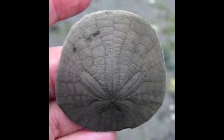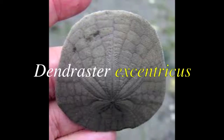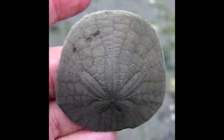The "eccentric" in the name Dendraster eccentricus refers to being off-center. See that the flower-shaped pattern is not dead center? It's a fitting name, as it has also evolved some eccentric behaviors unique amongst sand dollars — more on that later.